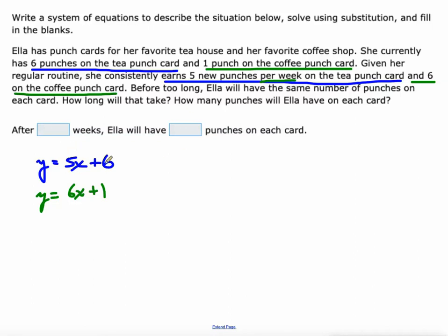We're going to write an equation here. We just take this 5x plus 6 and replace y with it. So we'll go 5x plus 6. We want to know when are the tea punches going to be equal to the coffee punches. So 6x plus 1 over here. Solve that equation. We're going to subtract 5x from both sides and then subtract 1 from both sides. So we know it's after one week. How many punches on each card? I'll plug that one week in here: 6 times 1 plus 1. Y equals 6 plus 1. So obviously, that's 7 punches on each card.